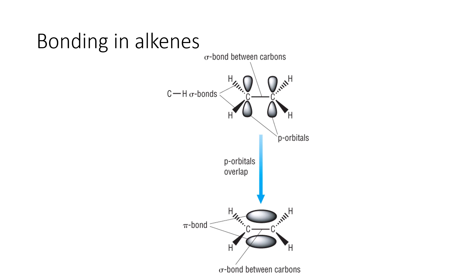So ethene has two carbon atoms bonded together, and then each carbon is bonded to two hydrogens. And it's worth noting that the bond from the carbon to the hydrogen is a sigma bond, as well as this line here between the two carbon atoms, which is sigma bonds as well.